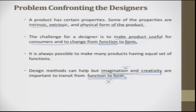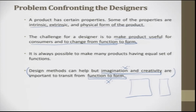Imagination and creativity are important to transit from function to form. Function refers to all the functions which a product is supposed to perform. Form is what shape has to be incorporated into the product. For example, we have the majority of phones flat — smartphones are flat. Why do we not have a cylindrical phone, something like your pen, which can be kept inside a pocket with a cylindrical circumference?